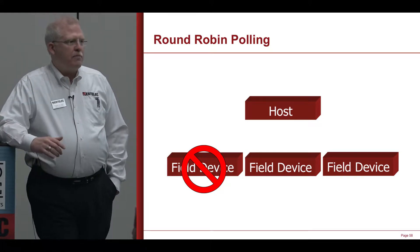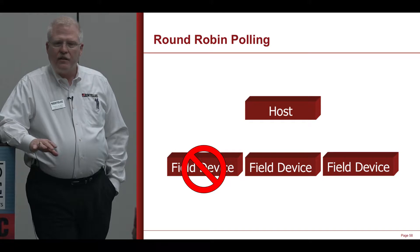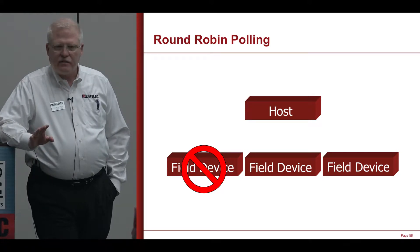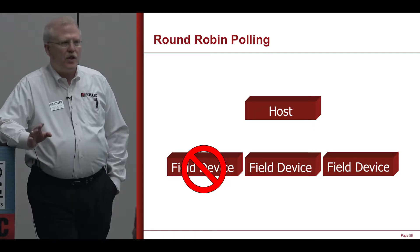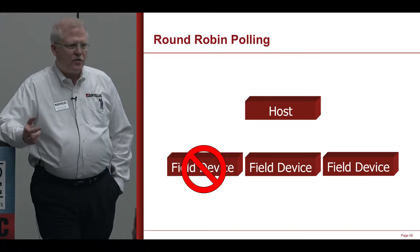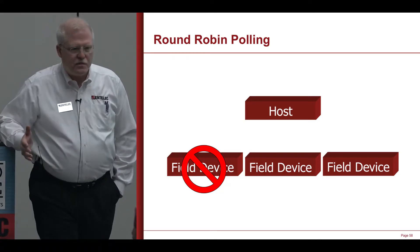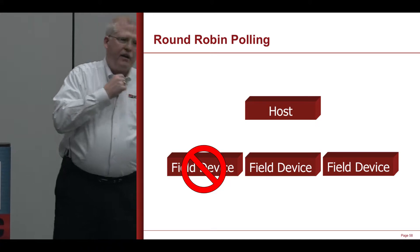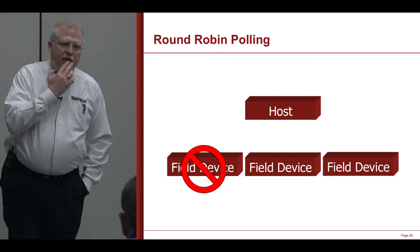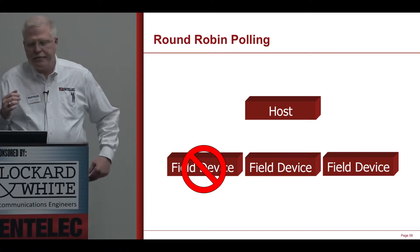Round-robin polling can be very fast if I don't have a lot of devices. If I have a lot of devices, it can be very slow — it can take 15, 20, 30 minutes to get all the way through a round-robin poll, maybe more. I've seen systems collecting wellhead measurement data where one round-robin poll takes four hours to get all the way around.